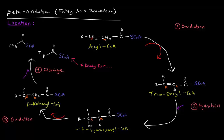In this video, I want to talk about beta oxidation, which is essentially the process by which we break down fatty acids, specifically for energy or for what will become energy. So, where does this process occur? It occurs in the mitochondrial matrix, and we'll see why that makes sense in just a moment.